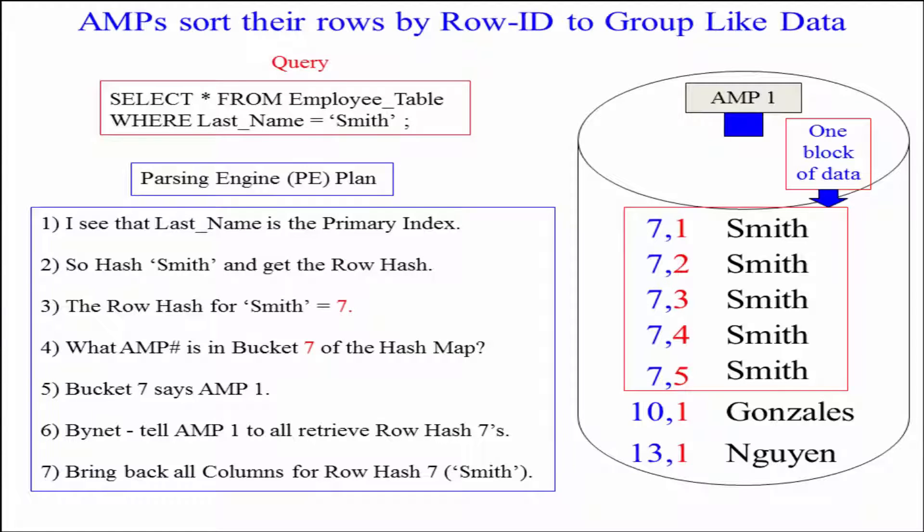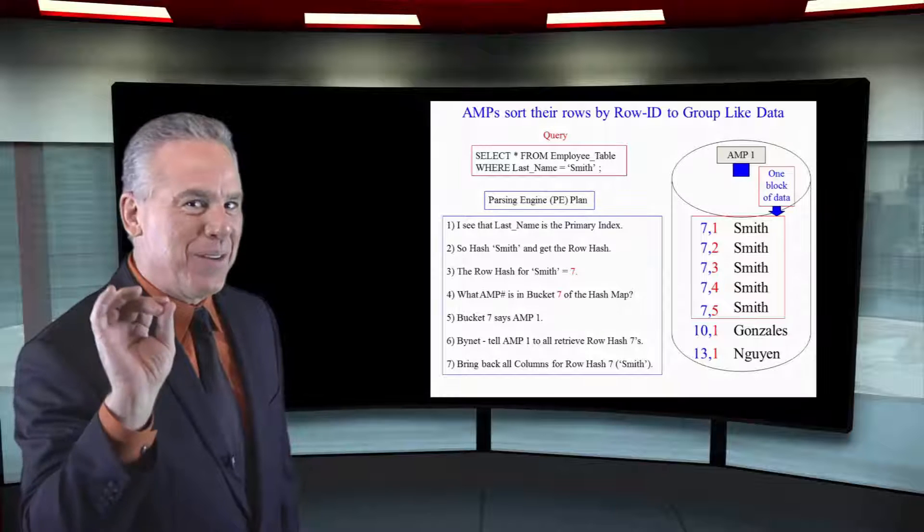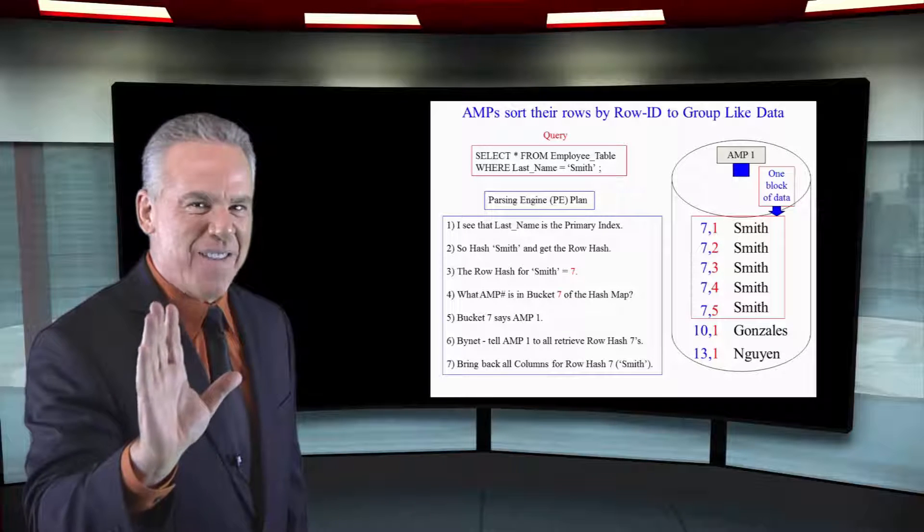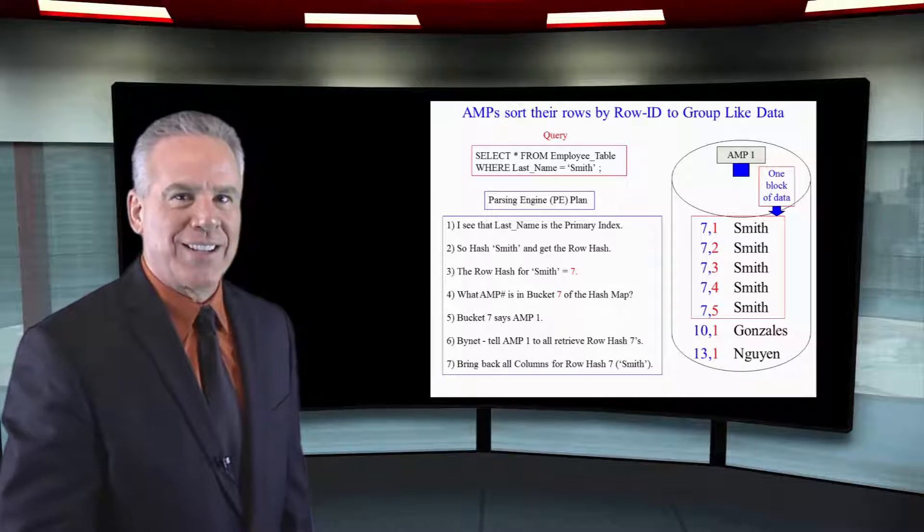Hash Smith. What did the row hash say? It said it's a 7. Count over 7 buckets in the hash map that says to go to this particular AMP. Okay, across the bynet we're going to tell that particular AMP: you go find row hash 7 and then check that it's a Smith and bring them all back. That's how the retrieval is going to go every time on a primary index lookup.